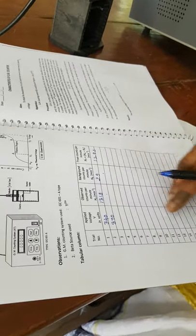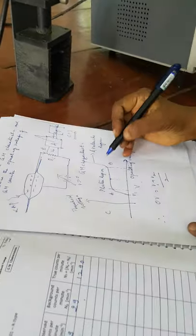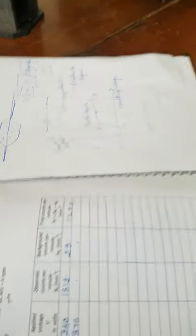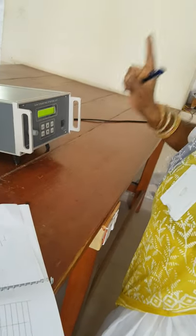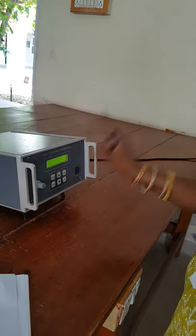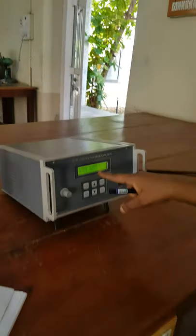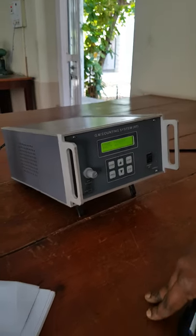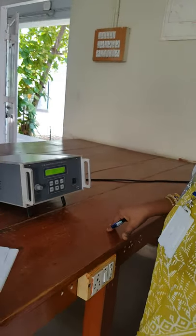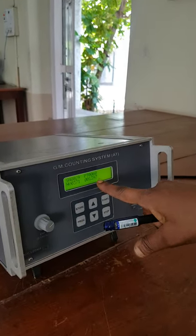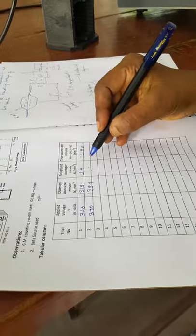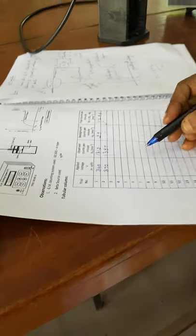Like that we go on doing it for every 30-volt increment and find the respective counts. We should continue until we get the avalanche region. At somewhere around 570V or 550V we will see the avalanche region. Let me check: 370, 430, 470, 500, 530, 560. Let me check at 530V. We should go on until we notice a sudden increase in counts — that will be the avalanche region.